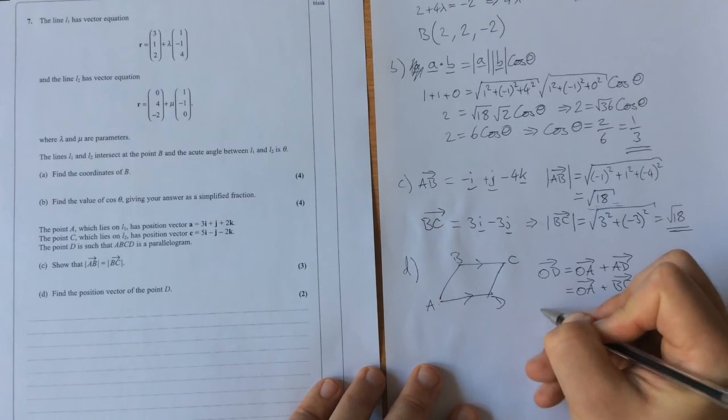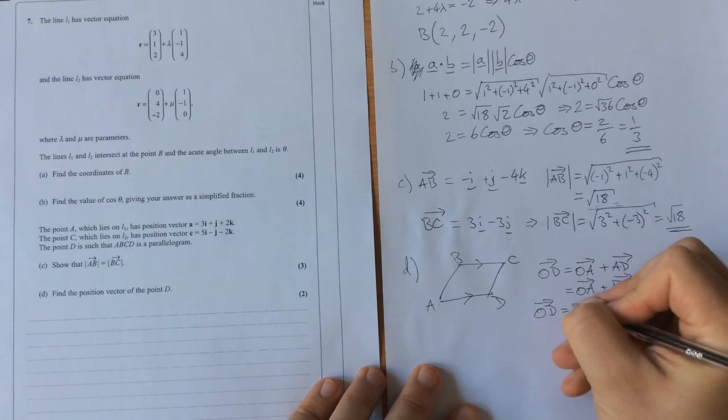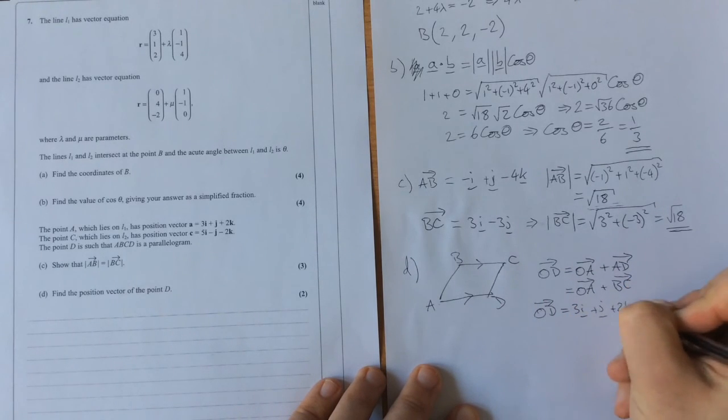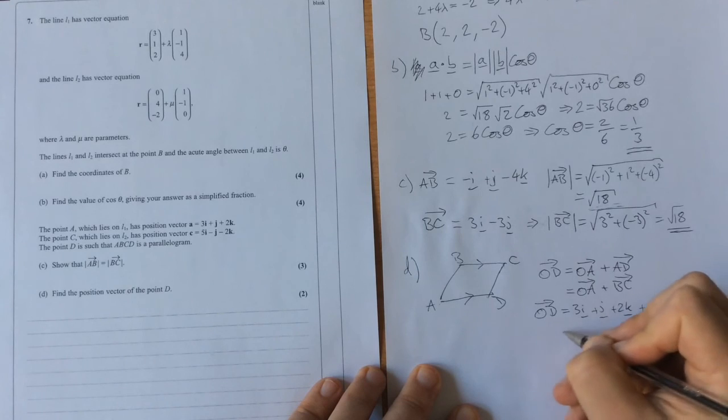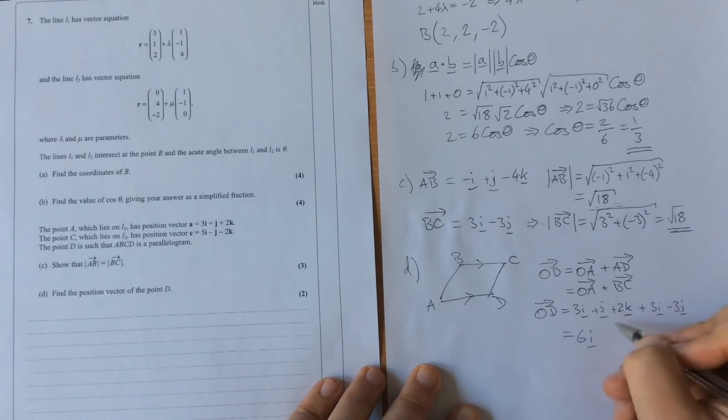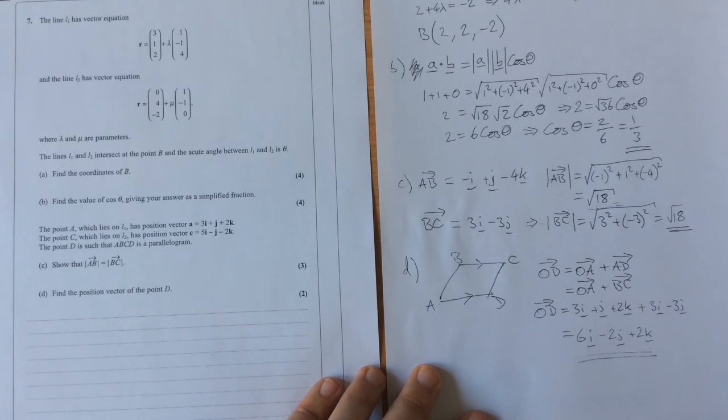So od equals oa, which is 3i plus j plus 2k plus 3i minus 3j. So this becomes 6i minus 2j plus 2k. And there is our position vector.